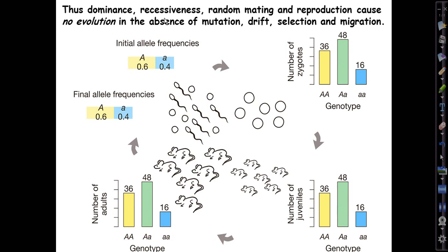Thus, those famous genetic phenomena that you spent much time worrying about in high school, dominance, recessiveness, and so on, as well as random mating, reproduction, it causes no, none of them, and all of them collectively, won't cause any evolution at the genetic level in the absence of mutation, drift, selection, and migration.